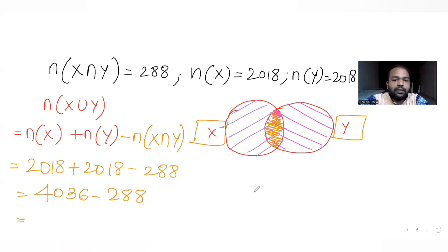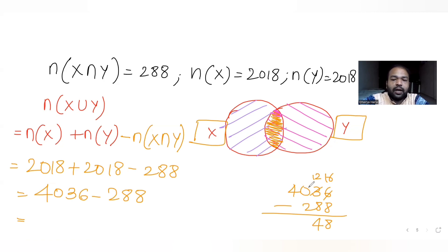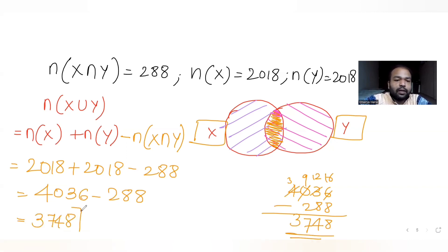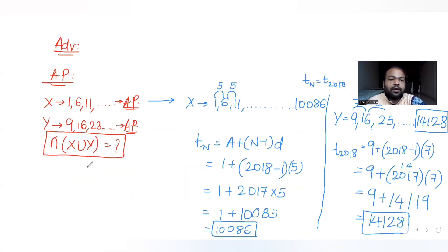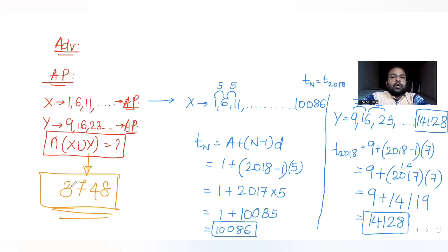Subtracting 288 from 4036: we get 3748. So the number of elements in set X union Y is 3748. That is the answer required.